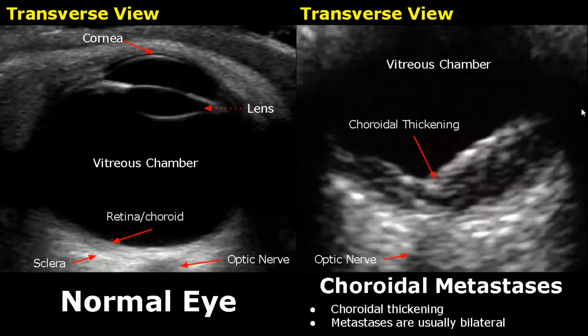Choroidal metastasis presents as choroidal thickening on ultrasound. It is usually bilateral, meaning it is present in both eyes.